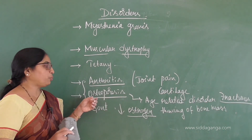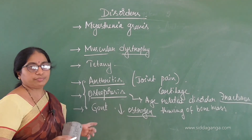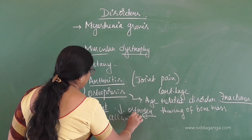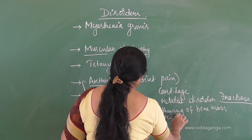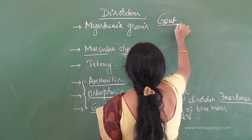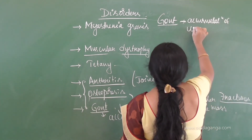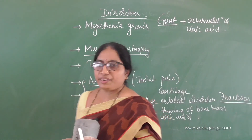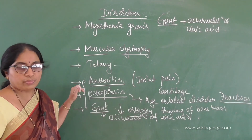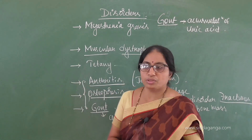Arthritis is joint pain; osteoporosis is degeneration or thinning of bone mass, an age-related disorder. Gout is joint pain due to accumulation of uric acid crystals in the joints. So myasthenia gravis, muscular dystrophy, and tetani are disorders of the muscular system, while arthritis, osteoporosis, and gout are skeletal system disorders.